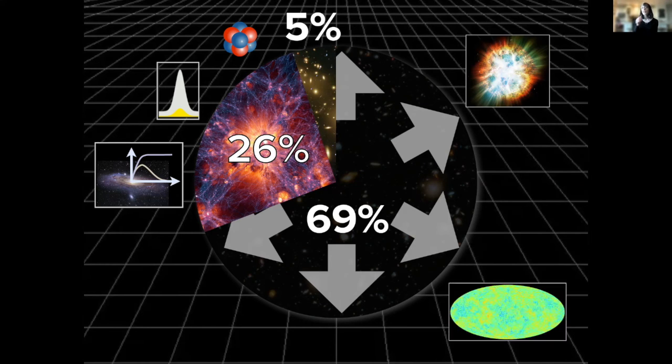We also have measurements of the cosmic microwave background radiation, which tell us the overall structure of the universe. It is flat. It is not curved. This gives us the total density of stuff that there must be.